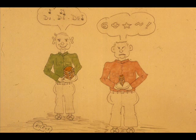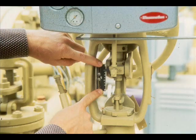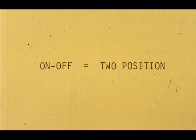The on-off controller is one for which the output is either maximum or minimum. There is no in-between or throttle position. The control valve is in either of two positions — it is fully open or fully closed. Consequently, on-off control is also called two-position control.